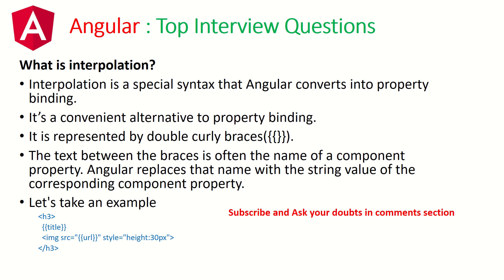What is interpolation? Interpolation is a special syntax that Angular converts into property binding. It's a convenient alternative to property binding, represented by double curly braces. The text between the braces is often the name of a component property. If you look at the example, we have 'title' inside double curly braces — whatever value is in the component class for title will be printed, and similarly for the URL. Interpolation is whenever you bind data using double curly braces to display from class to view.